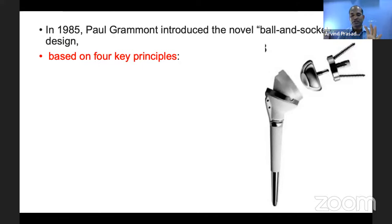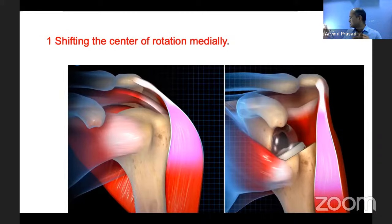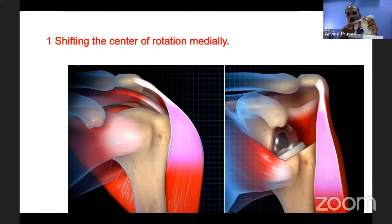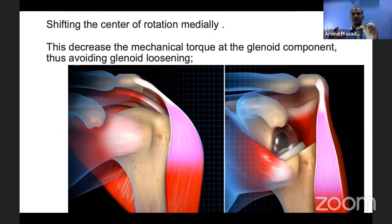The first principle is shifting the center of rotation from lateral to medial. Normally the center of rotation lies laterally within the shoulder joint, but in reverse shoulder arthroplasty it is moved significantly medially. This medial shift decreases the mechanical torque over the glenoid base plate, thereby reducing glenoid loosening.